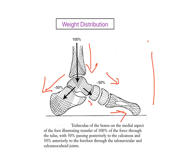Here the trabecular which are formed, we can see on the medial aspect of the foot. This is because the talus is located more medially in the foot, so 100% of the weight is transmitted directly on the talus. From the talus it is divided.